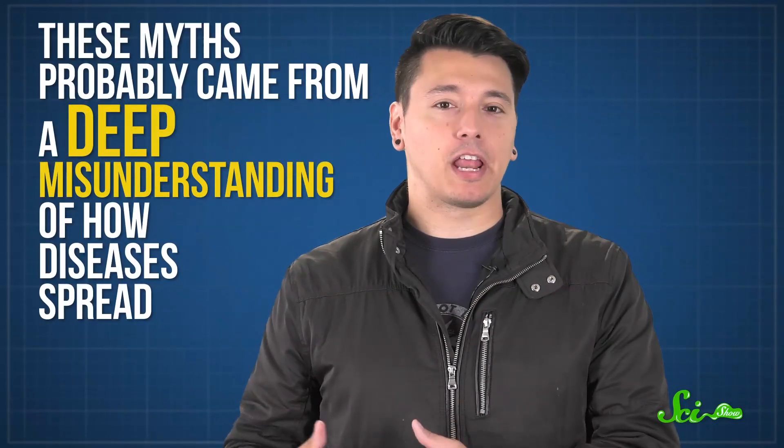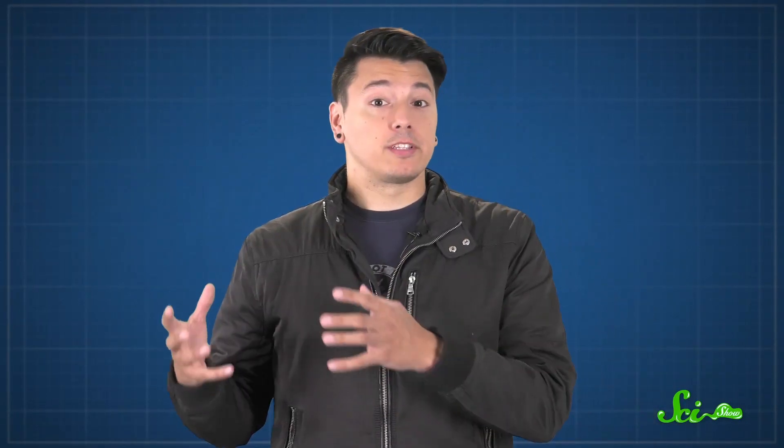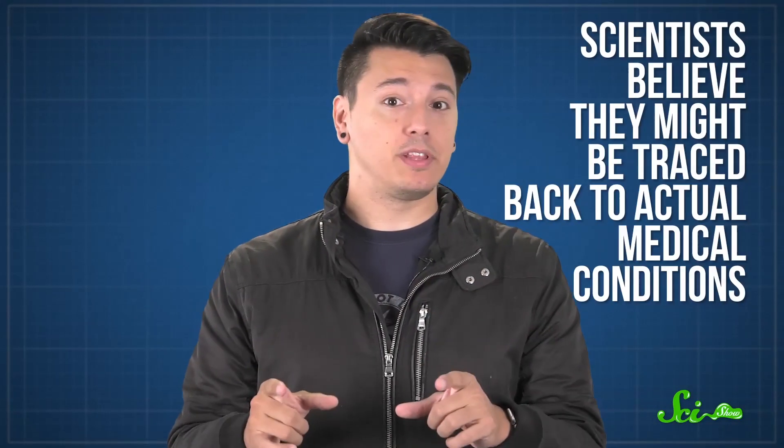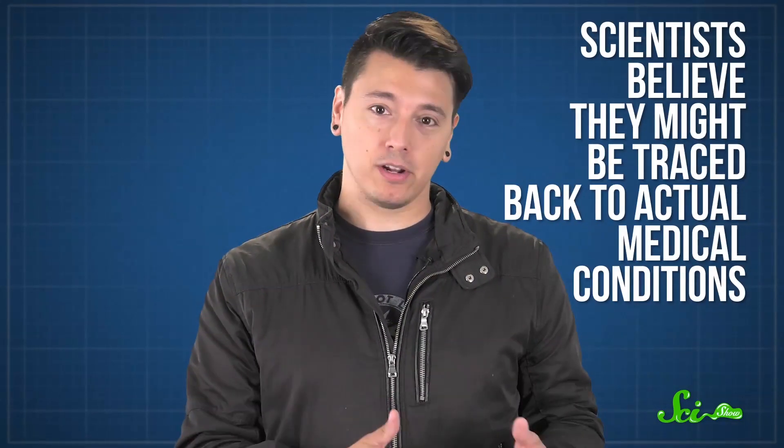Mainly, these myths probably came from a deep misunderstanding of how diseases spread. During epidemics like the plague, people were understandably terrified and searching for explanations for the apparent randomness of the illness. But the vampire myth that's caught on in pop culture has very specific symptoms, and scientists believe they might be traced back to actual medical conditions.